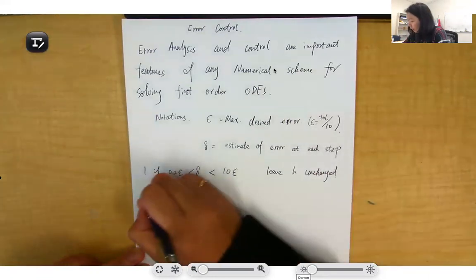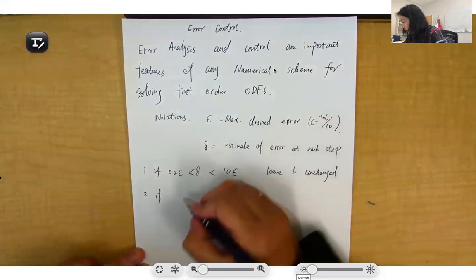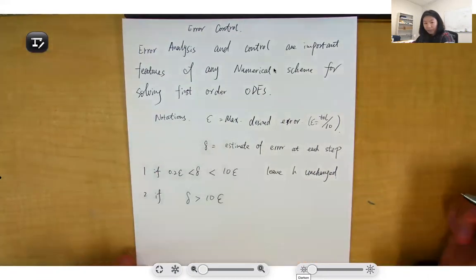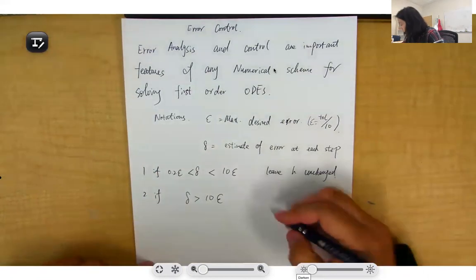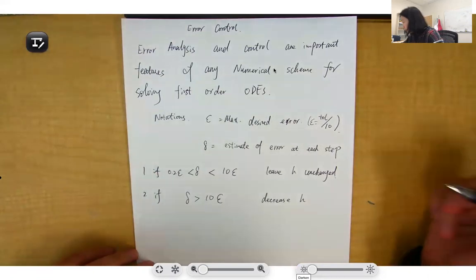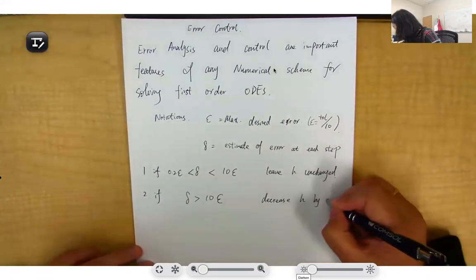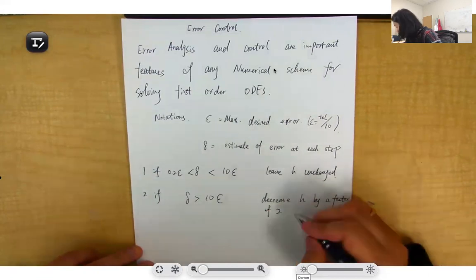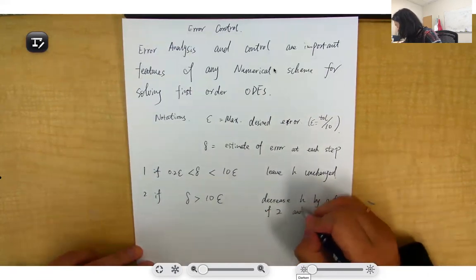If sigma is too big, which is over 10ε, then we will decrease the step size h by a factor of 2 and redo the error control.